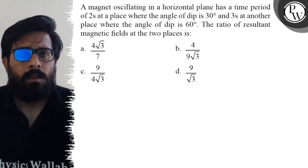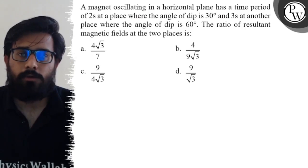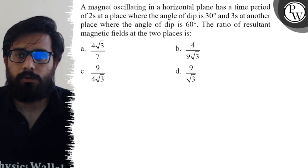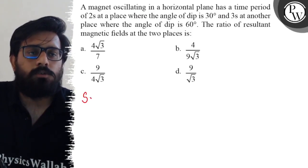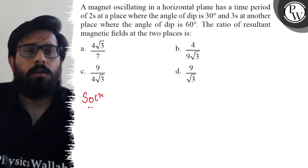Your first option is 4√3/7, second option is 4/(9√3), third option is 9/(4√3), and the fourth option is 9/√3.